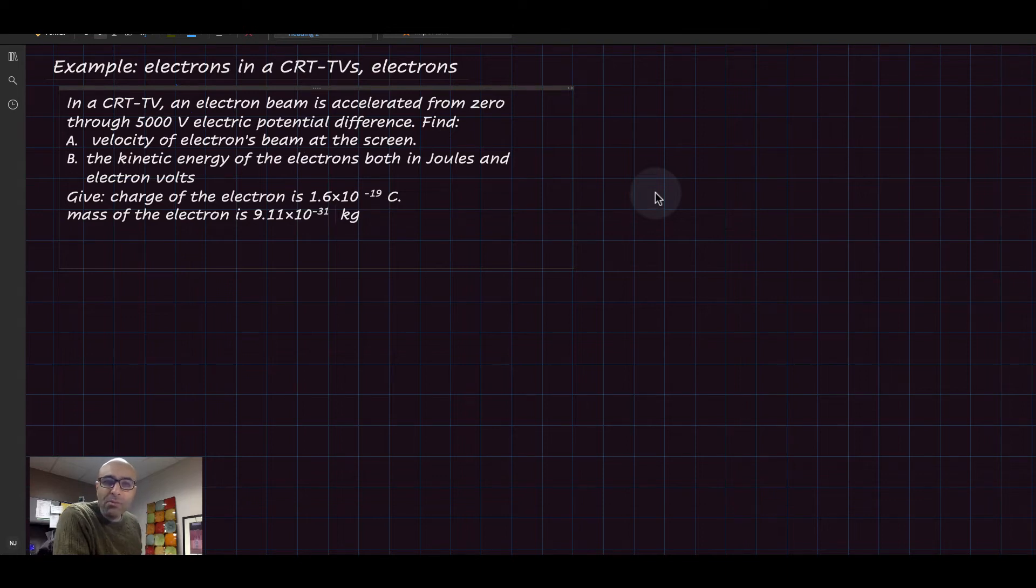Hello everyone. I hope everybody is doing well. Today in this example, we will discuss how a beam of electrons can go fast within the CRT cathode ray tube of TVs.